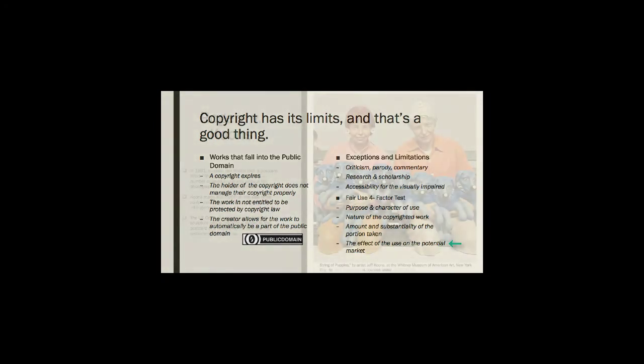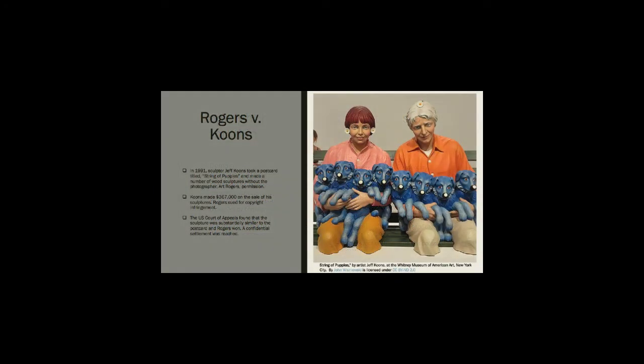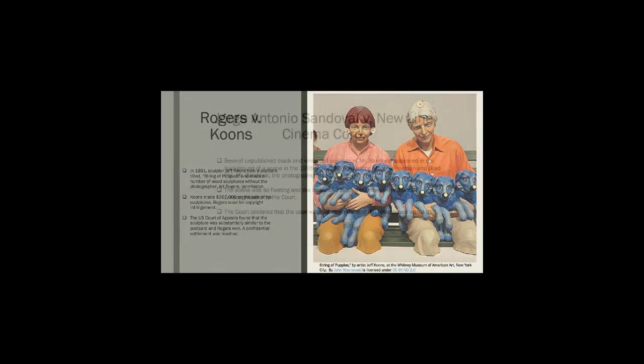Here are two examples. In Rogers versus Coons, a sculptor used a copyrighted photograph as a basis to create wood sculptures, which had the qualities of the photograph. He made hundreds of thousands of dollars on the sculptures. The photographer sued, and the sculptor claimed fair use because the photographer was not going to make sculptures. The sculptor lost. The court sided with the photographer, stating that a potential market for sculptures of the photograph existed.